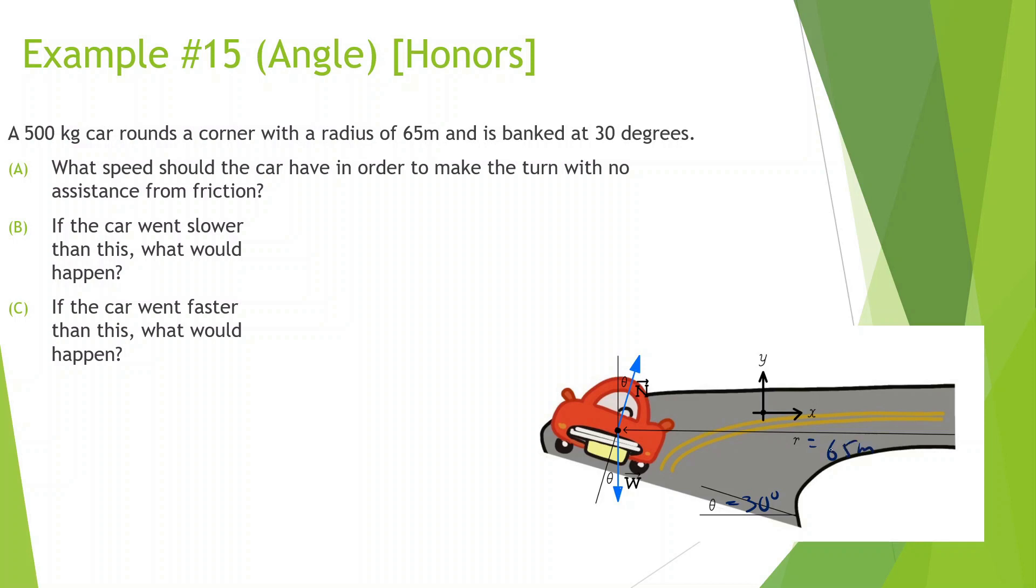What speed should a car have in order to make the turn with no assistance from friction? Sometimes when you have to really make a tough, tight curve, the road is banked a little bit like this. Let me show a little bit of what the free body diagram should look like. First of all, we have the force of gravity going straight down like this, same as always, 500 times 10, 5000 newtons.